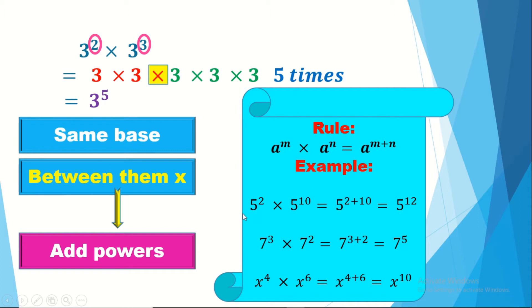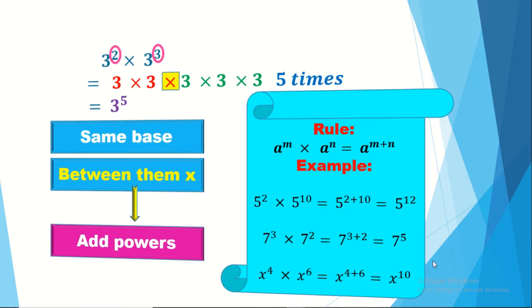We can apply the rule directly. For example, 5 to the power 2 times 5 to the power 10 equals 5 to the power 12. In general, x to the power 4 times x to the power 6 equals x to the power 10.